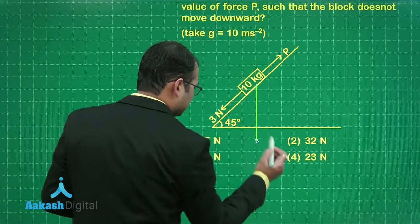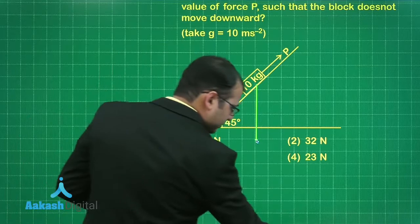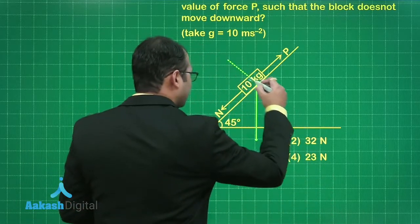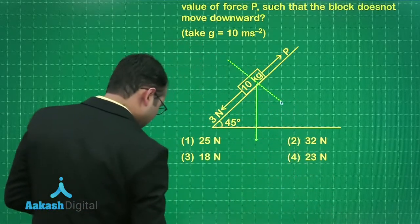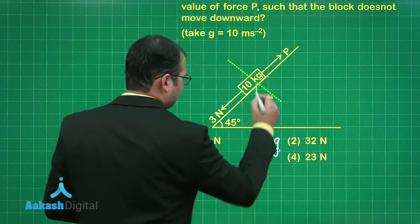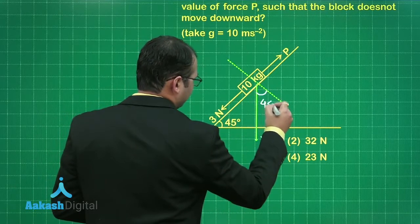Mg will be acting downwards and let's take from here to here a normal. In this question this is Mg, this is 45 degrees so certainly this is also 45 degree.